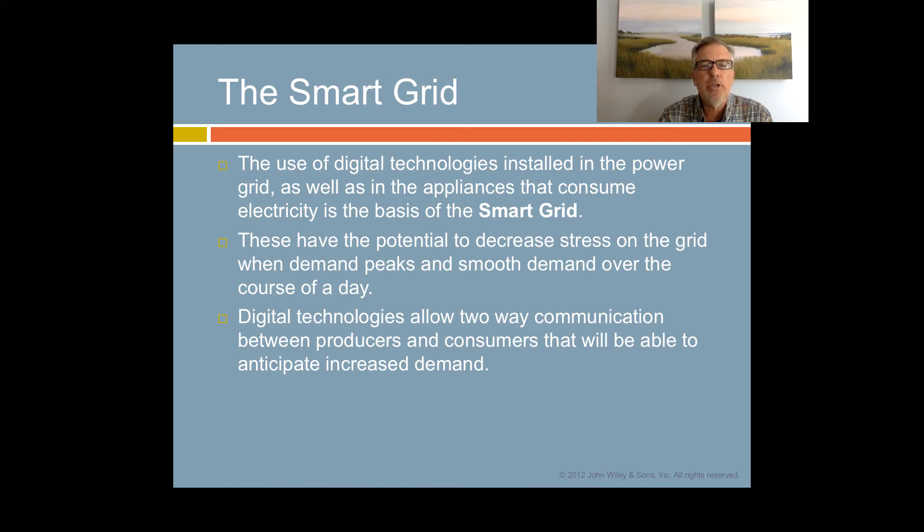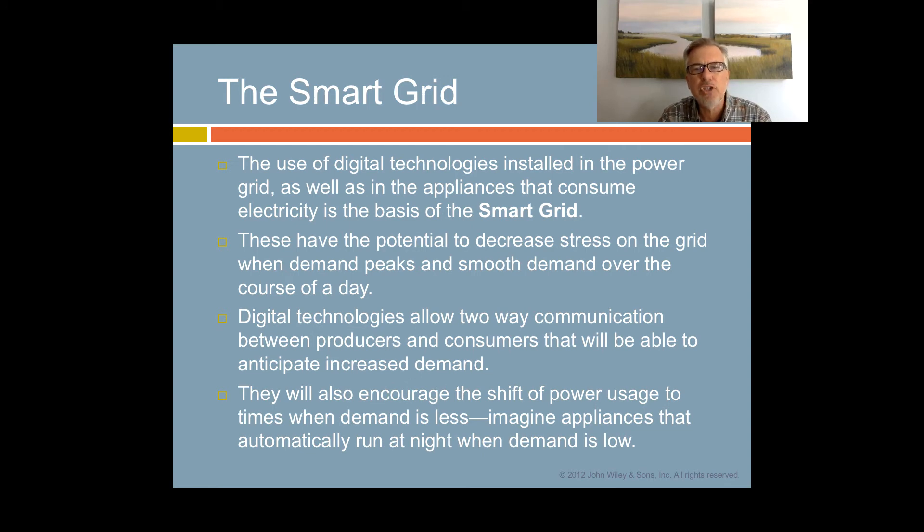As I said earlier, the two-way communication between producers and consumers will be able to anticipate increased demand. The other thing it will be able to do is encourage the shift of power usage to times when demand is less. Imagine appliances that automatically run at night when demand is low and schedule to use energy in the low demand times. I do not understand all that much about the smart grid, but that is an interesting thing to keep your eye on in newspaper articles to see what the future holds.